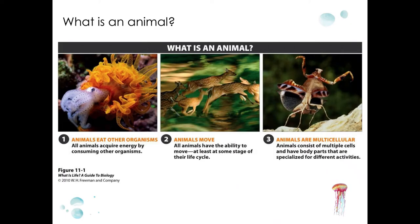There are characteristics that animals have. They're eukaryotic heterotrophs, so they acquire energy by consuming other organisms. Most animals are also able to move, and animals in general display locomotion at least at some stage of their life cycle. Animals are also multicellular.